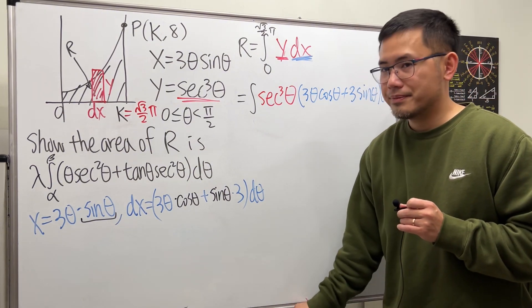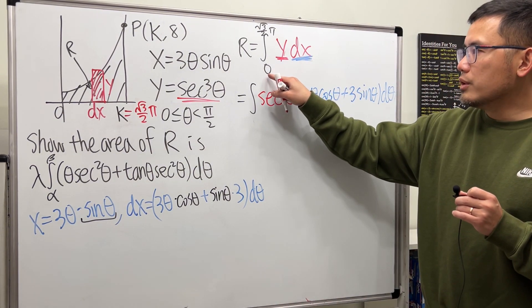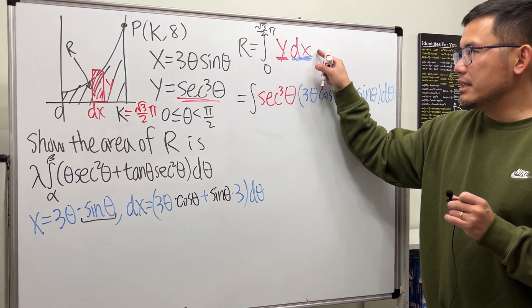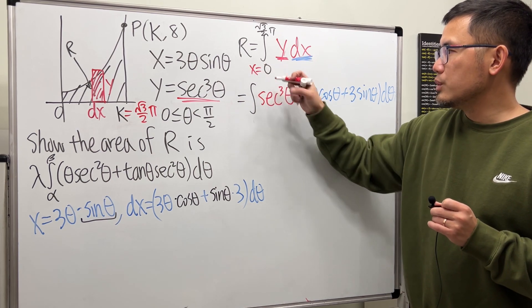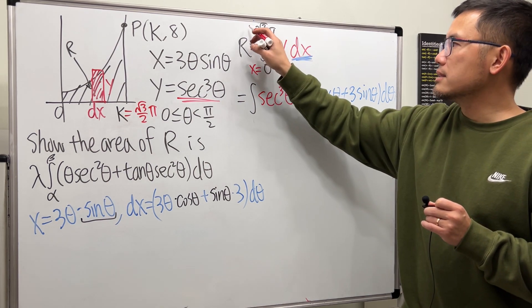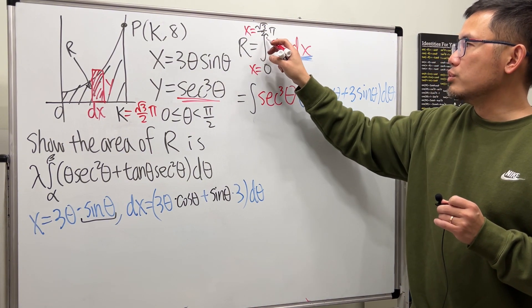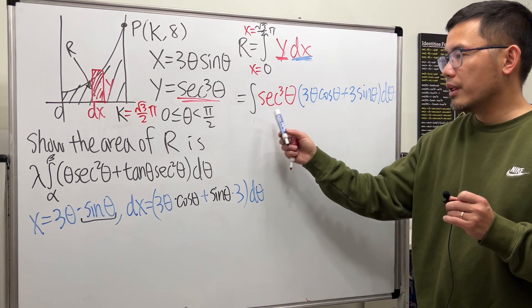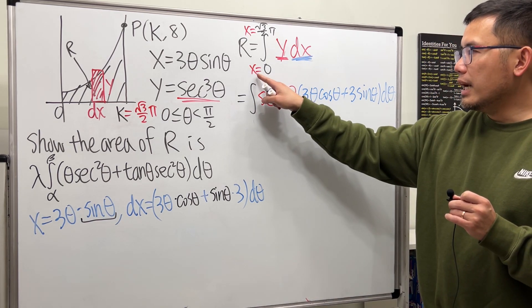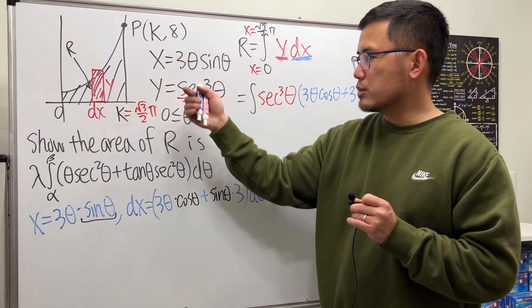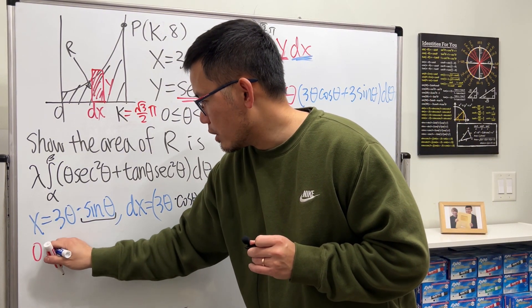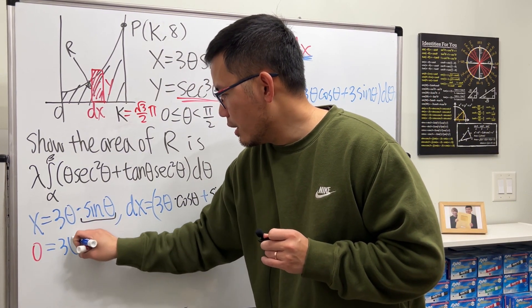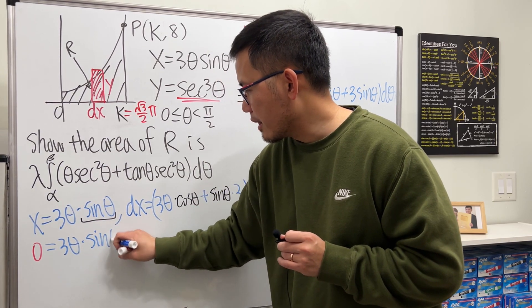Now here's the hard part. Originally we have 0, but that's in the x world. So we know x equals 0 up to x equals √3/2 π. We will have to change them to theta. Go ahead, plugging 0 into x right here, so we know when x is 0, we get 3θ sinθ.